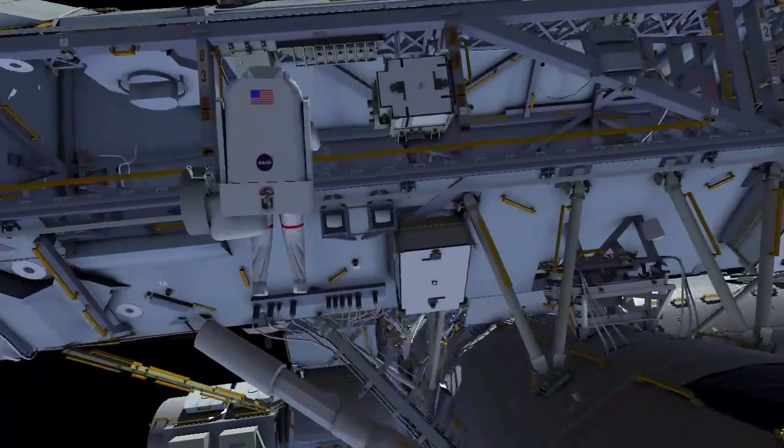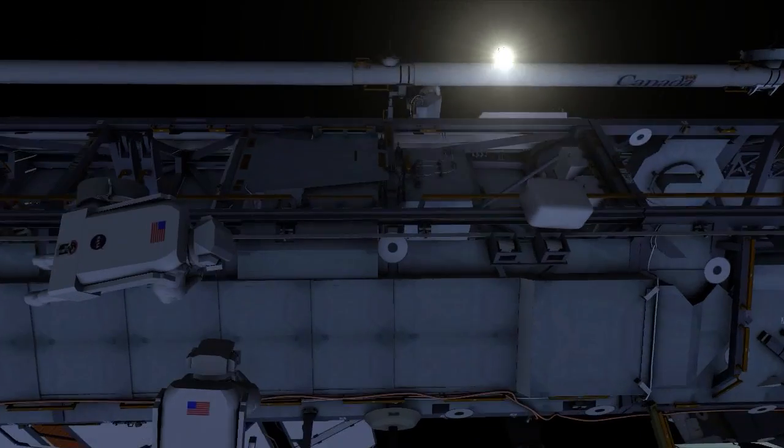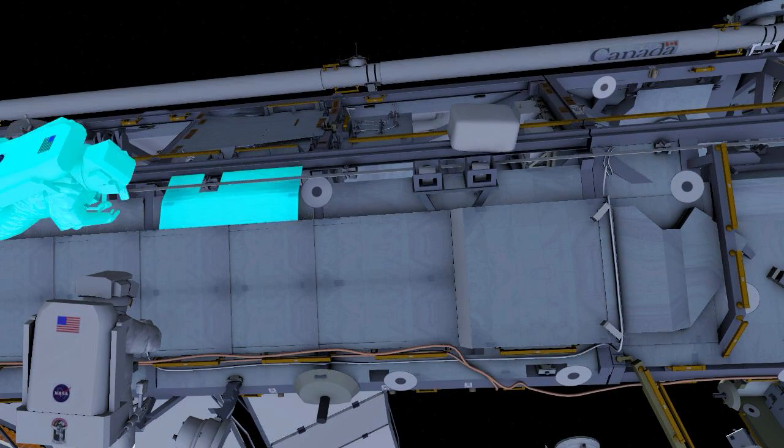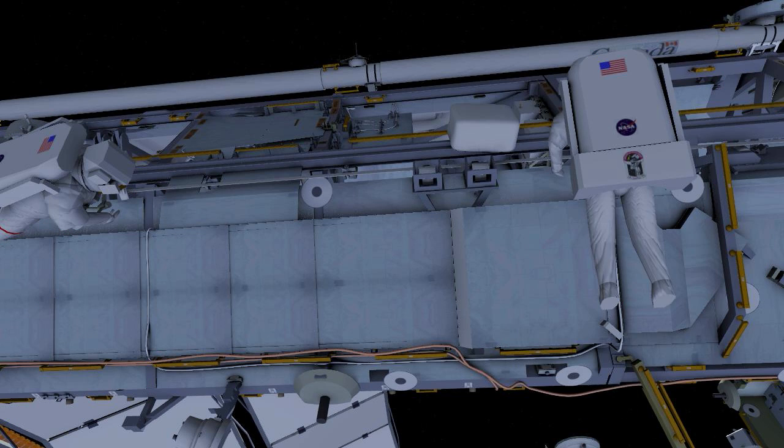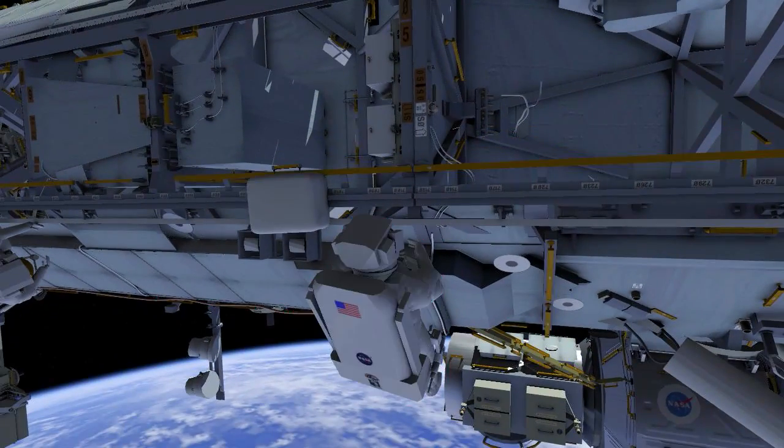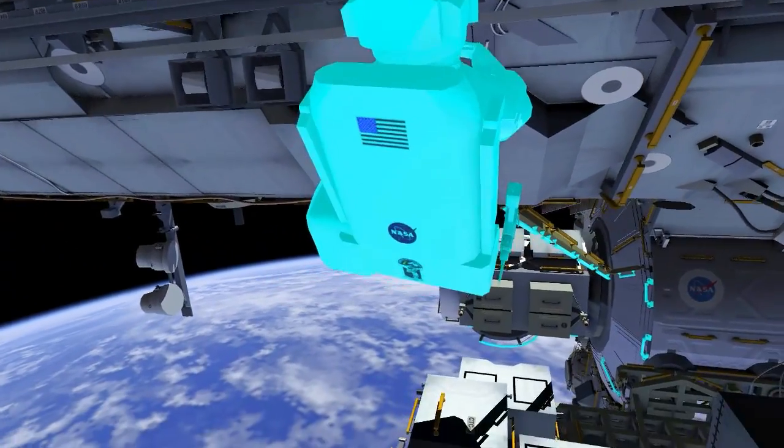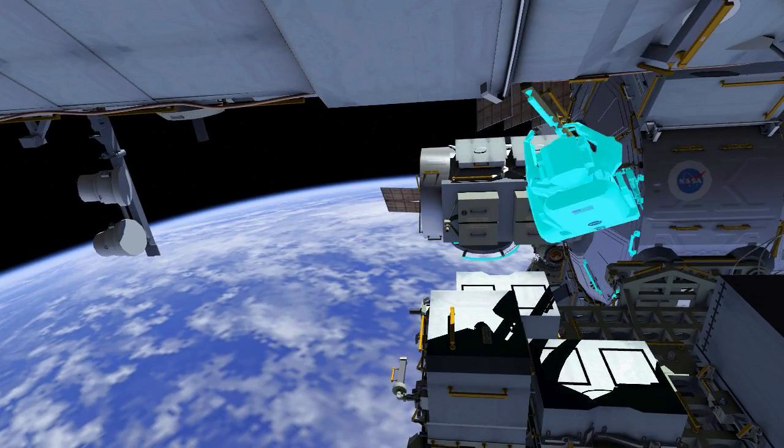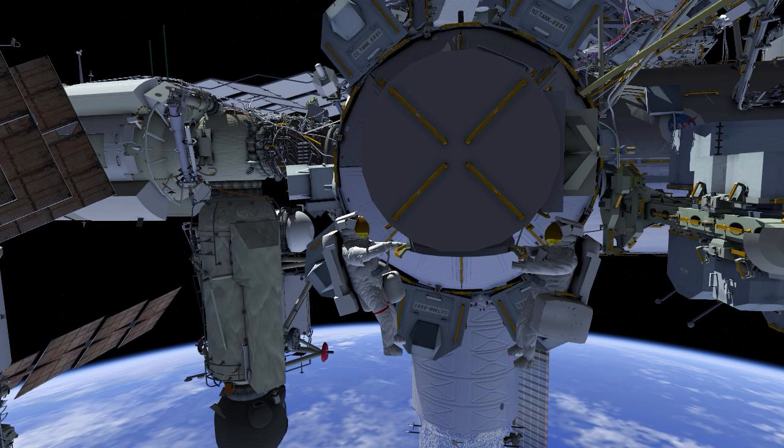EV1 picks up the remaining tool bags and, depending on timing, returns to the crew lock or assists EV2 in routing the cable Zenith to the pump module. This completes the planned tasks for the radiator beam valve module jumper install EVA. Crew return to the crew lock and ingress.